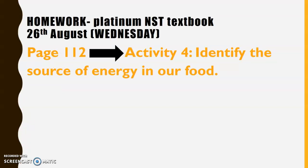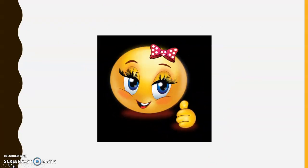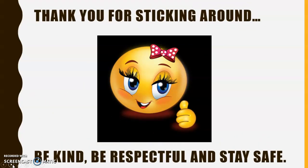For your homework, it is in your Platinum textbook on page 112. There's a picture there for you to look at and observe. Before you start answering questions, make sure you look at the picture very carefully, and when we do corrections you will look at the picture together. The heading for the activity says 'Identify the Source of Energy in Our Food.' This is more of an intro lesson, and I will give you more information in our next lesson. That's it for me — thank you for sticking around, and remember: be kind, be respectful, and stay safe.